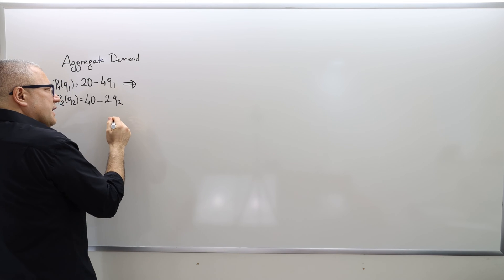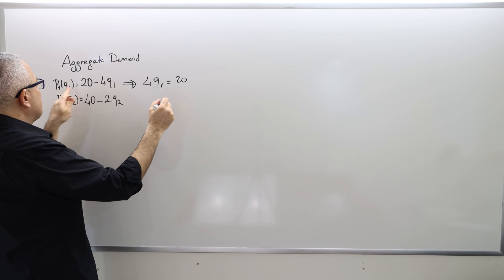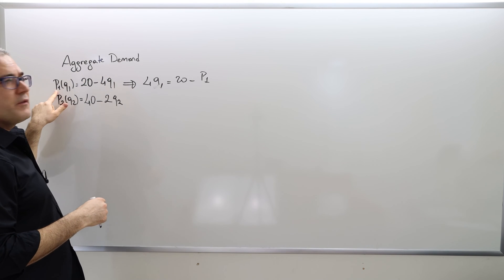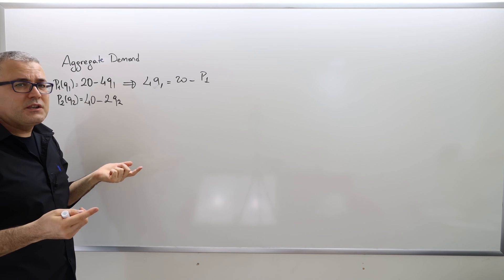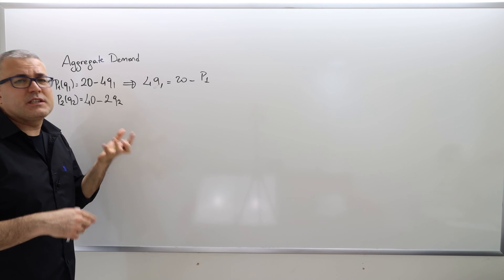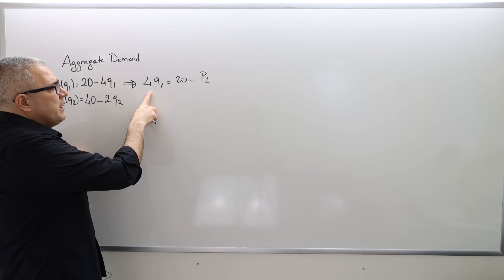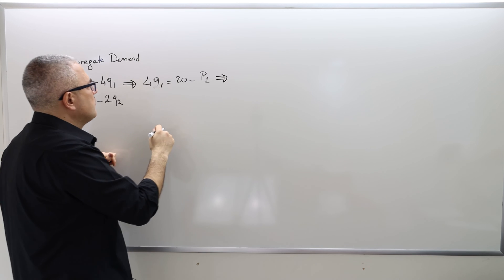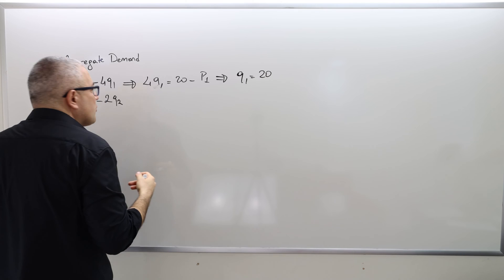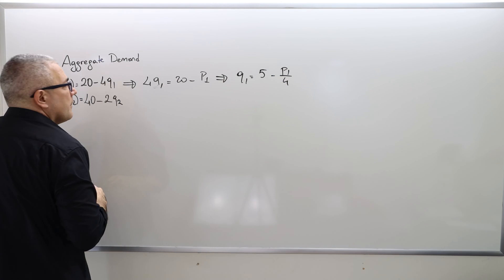From the inverse demand curve, we just take the inverse of it — meaning we send the q1 term to the left-hand side, so 20 stays in place minus p1. The parentheses around q1 just indicate this is a function of q1, so they're not important when doing the inversion. We always leave the term on the left-hand side alone. Dividing both sides by four gives q1 equals 5 minus p1 over 4.